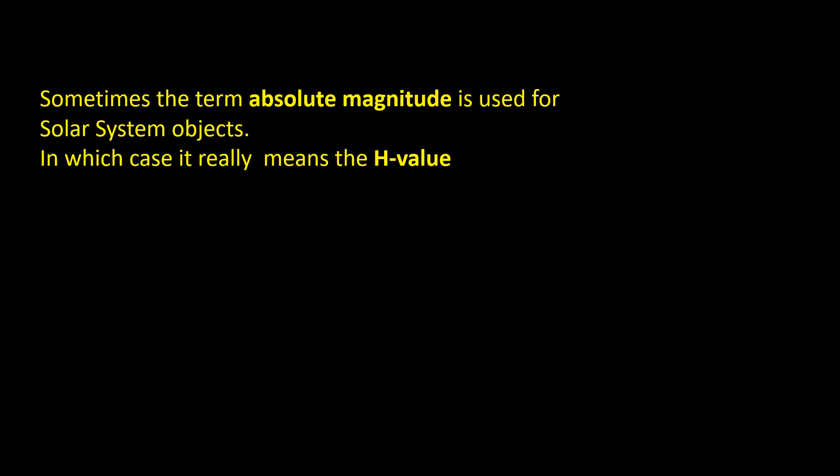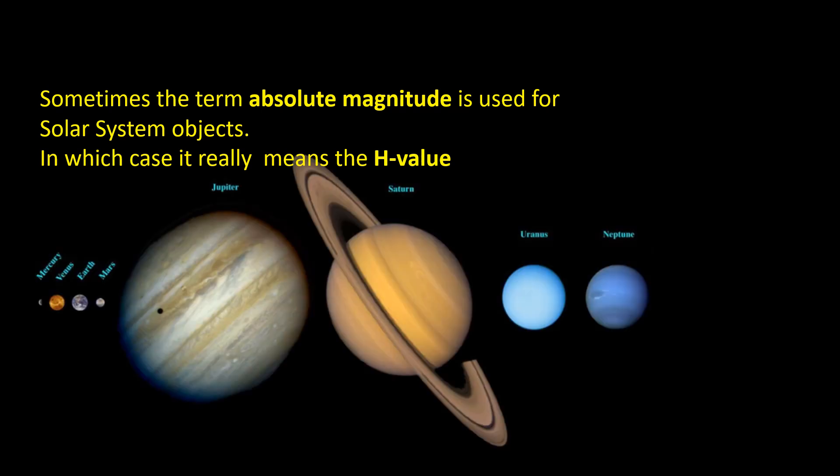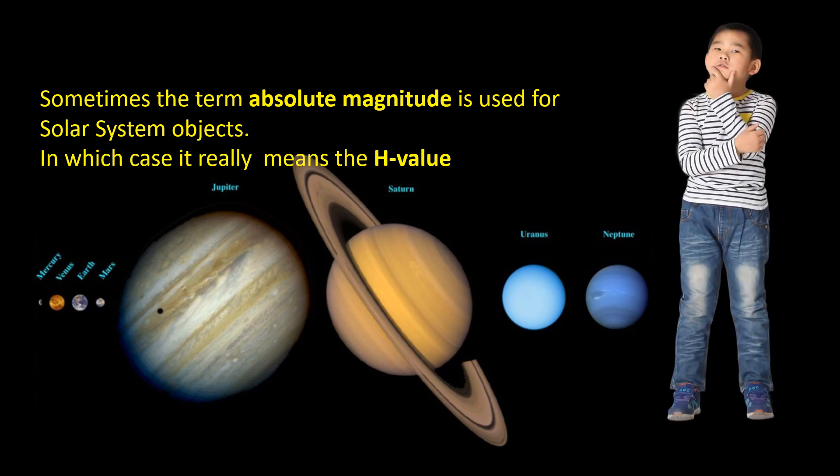Just to complicate things, sometimes the term absolute magnitude is used for solar system objects. In which case it actually means the h-value. Personally, I find this different use of the term confusing.